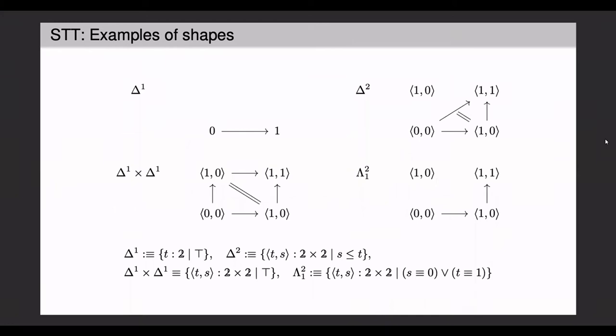So how does this theory build up? First of all, we start with the directed bipointed interval or the one simplex. You can take finite powers of this, giving us the square, the three-dimensional cube, and the higher cubes.